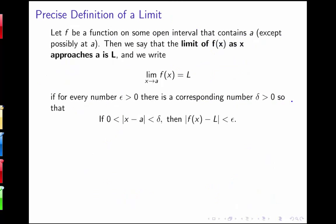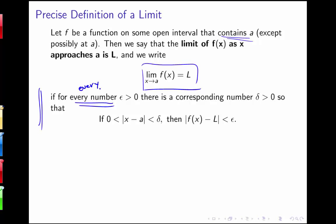So our precise definition says: if f is a function defined on some open interval containing a — the value our limit approaches, and perhaps f isn't defined at a — then we say the limit of f as x approaches a is L, written in the standard notation, if for every number epsilon greater than 0, we can find a corresponding number delta greater than 0 such that if 0 is less than the absolute value of x minus a, which is less than delta, then the absolute value of f of x minus L is less than epsilon. In other words, if x is no more than delta away from a, then f will be no more than epsilon away from L.